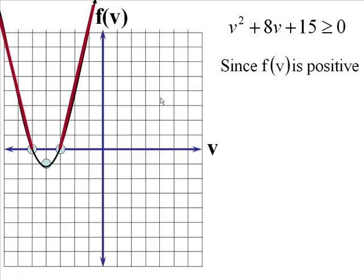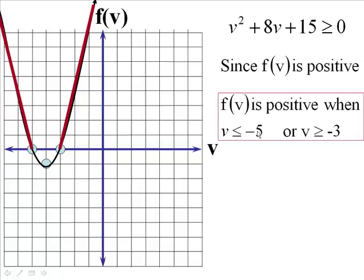So since this is positive, we get to say, okay, only use the red part here. Now tell me what V is here. It's numbers that are greater than minus 3 and less than negative 5. So V is less than negative 5 or V is greater than negative 3.